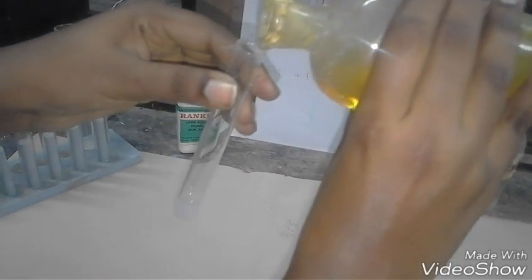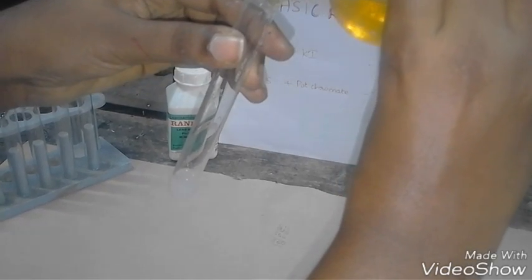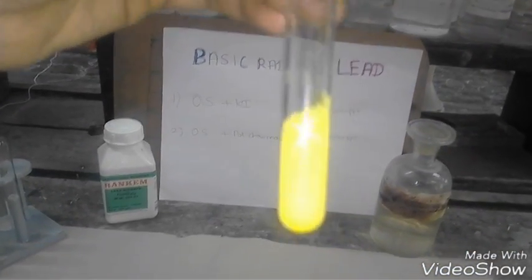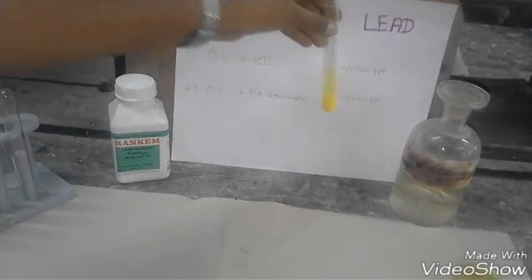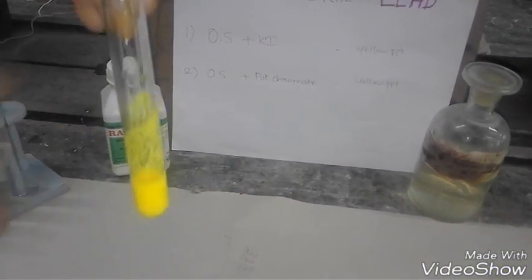When we add a little amount of potassium chromate into the original solution that we took in the test tube, it becomes bright yellow in color. This yellow color is a little bit lighter than the first yellow precipitate.